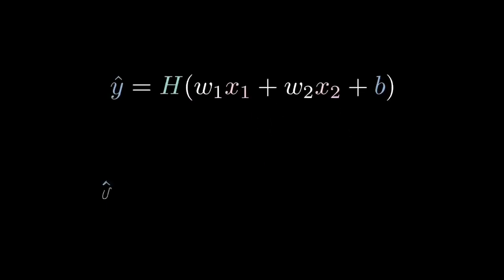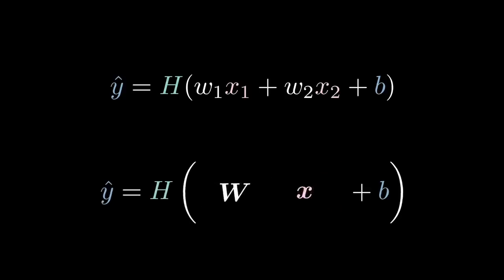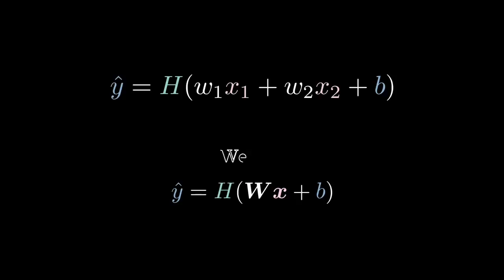Instead of looking at each variable separately, what if we took all the w's and put them into a matrix, and all the x's then put them into a vector. Then this multiplication can be written as a matrix multiplication between the w matrix and the x vector plus b. The values in w are called the weights and b is called the bias.